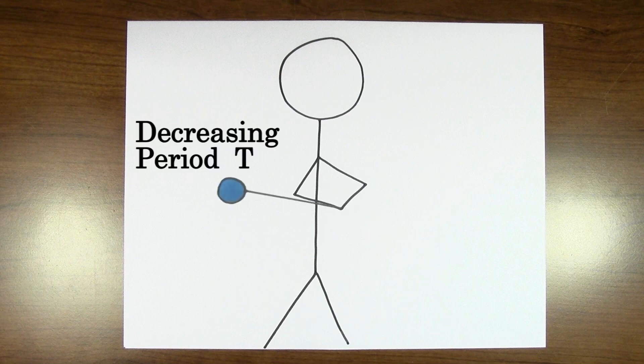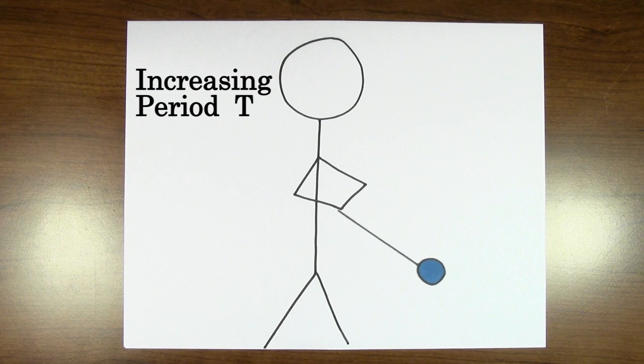So decreasing the period will speed up the process. And if we increase the period, the process has to slow down because the time it takes to complete one circle is now getting longer.